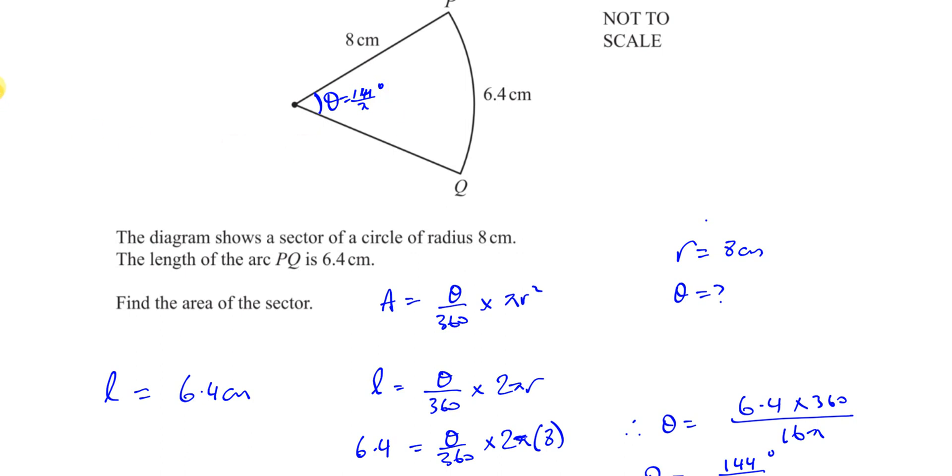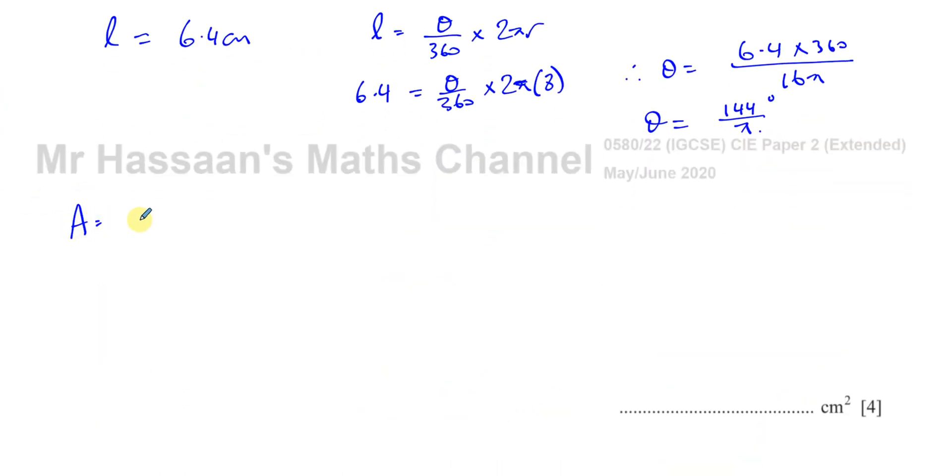Now, we're going to find the area now. So the area is the angle, theta over 360, times pi times r squared, which is 144 over 360, and we've got the pi there. Okay, times pi times r squared, and r, as we know, is 8 times r squared.